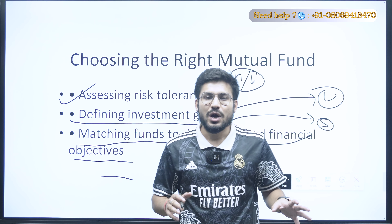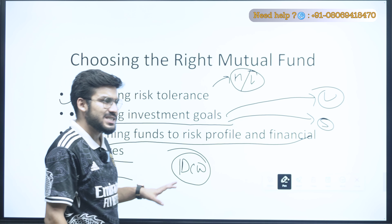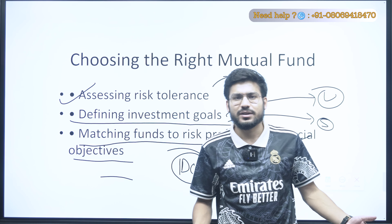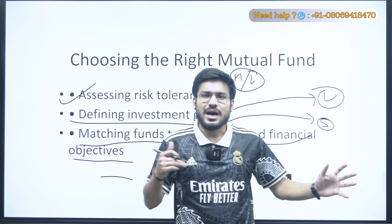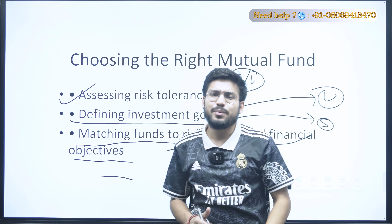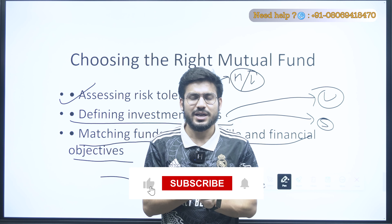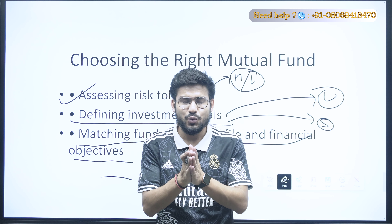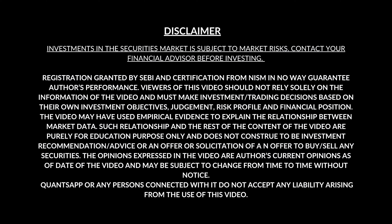How to choose the right mutual fund: first, assess your risk tolerance — if you want low risk go with debt funds, if you want high risk go with thematic or equity mutual funds. Second, define your investment goals — for long-term growth invest in equity; for short-term go with debt funds and money market mutual funds. Third, match the mutual fund to your risk profile and financial objectives. If you want a regular payout you can go with IDCW mutual funds. Always invest as per your life requirements.